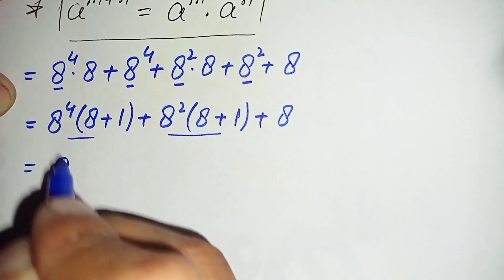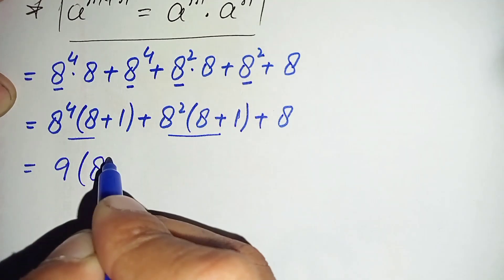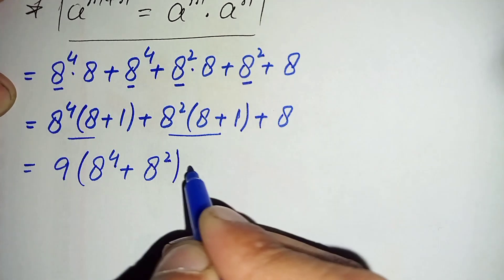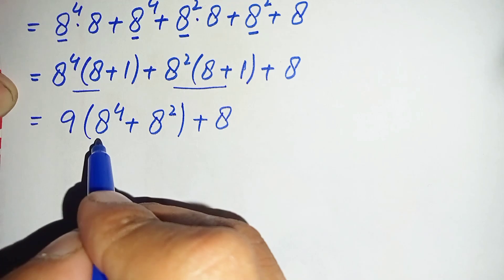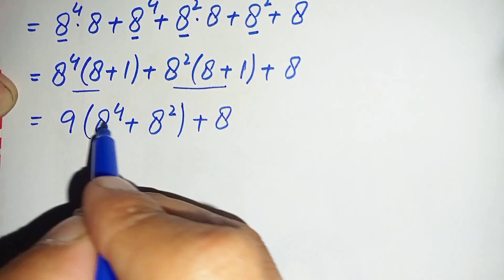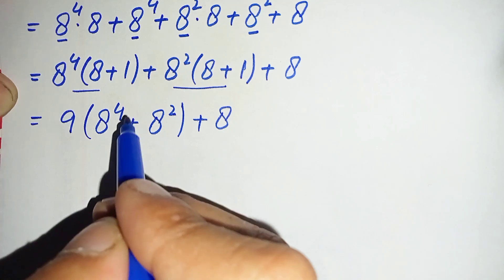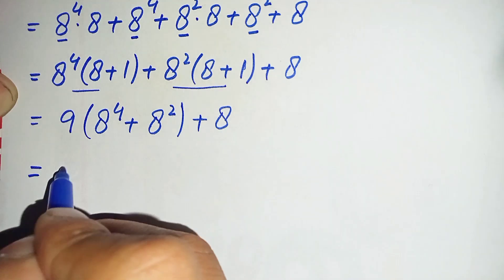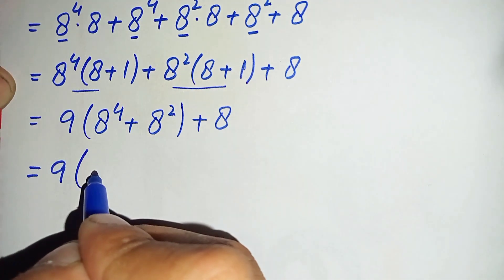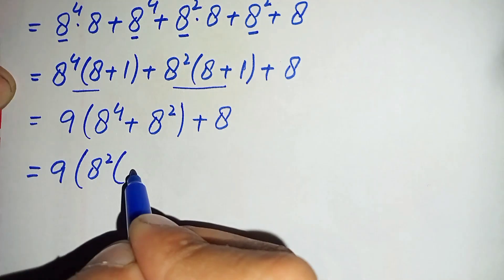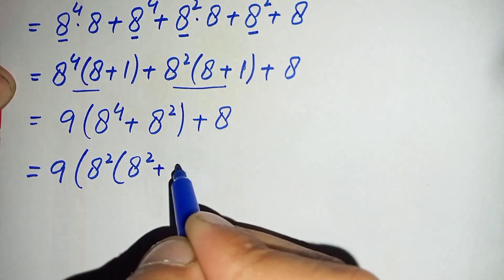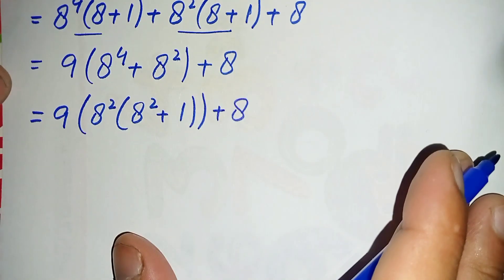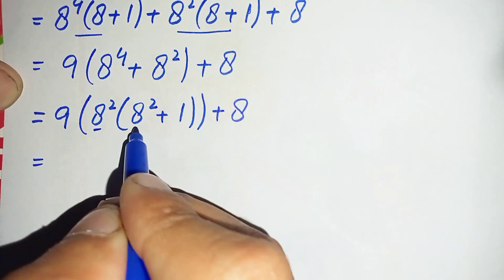Taking 9 common gives: 9 times (8 raised to power 4 plus 8 raised to power 2), plus 8. Next, we take 8 raised to power 2 common from inside the parentheses. It becomes: 9 times 8 raised to power 2 times (8 raised to power 2 plus 1), plus 8.